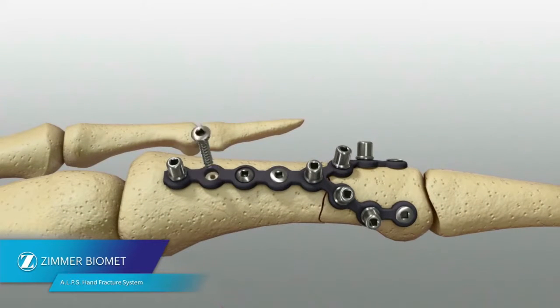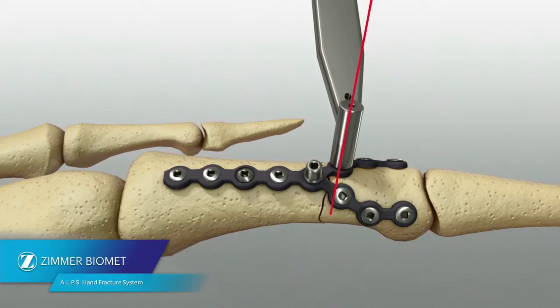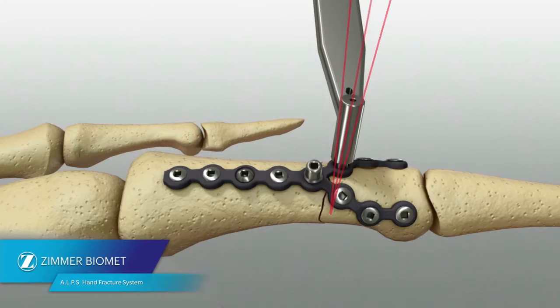When using a multi-directional screw, remove the fast guide prior to drilling. Drill through the soft tissue guide with appropriate drill in the desired direction. It is recommended that the hole is not drilled more than 10 degrees off axis.